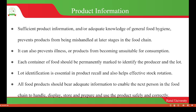Therefore, each container of food should be permanently marked to identify the producer and the lot. This will help in traceability. There also has to be lot identification, which is essential in product recall and also helps with effective stock rotation, so that you know which lot to use first — especially the one which you have stored first.